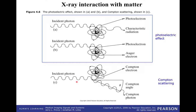Two processes occur in the patient. One is the photoelectric effect: the photon hits an electron in the atom, you get a photoelectron ejected, and then an outer-shell electron drops back into the lower shell, emitting characteristic radiation. We're not going to use this radiation usually — all we care about is that the photon gets absorbed.